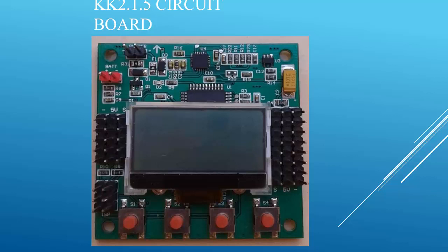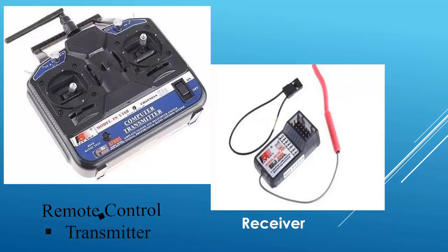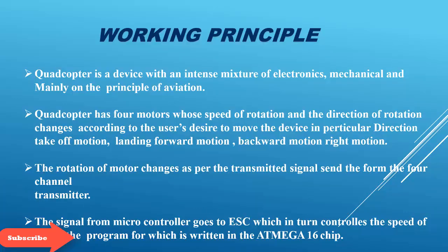Here is the KK2.1.5 circuit board, which basically allows us to control the directions of the drone. Brushless motors allow the drone to fly with their speeds. The ESC is the controller that controls the speed of the brushless motors. The remote control system consists of the transmitter and the receiver, both working at 2.4 gigahertz.